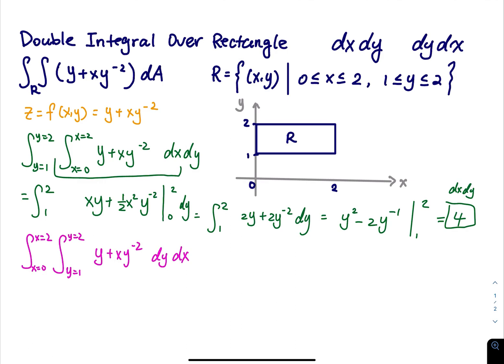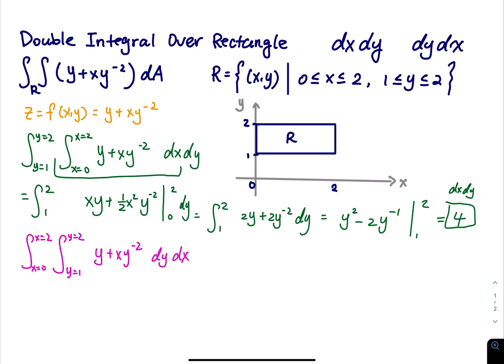You are going to get the same answer either way. But which order should you choose? Sometimes dx dy is easier, sometimes dy dx is easier — it depends on the integral. Sometimes dx dy takes 2 minutes, but switching to dy dx might require u-substitution, integration by parts, and end up taking 10 to 15 minutes.